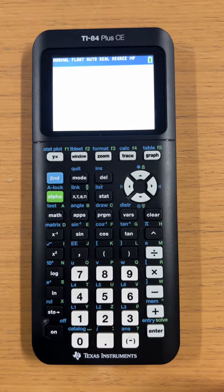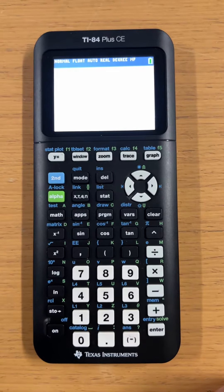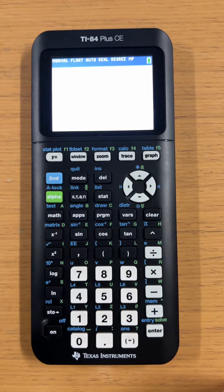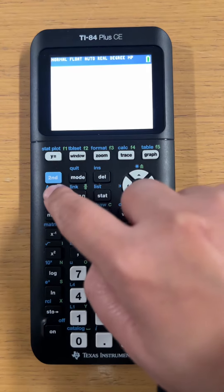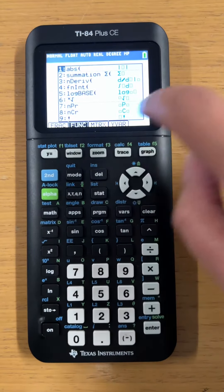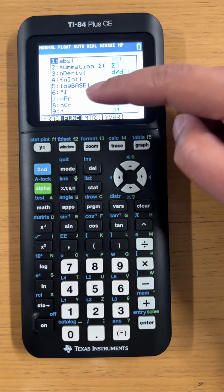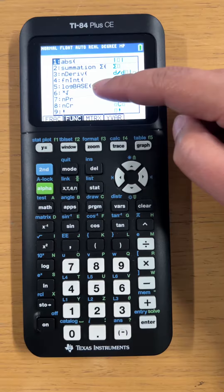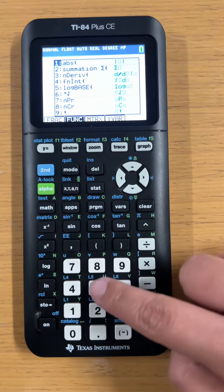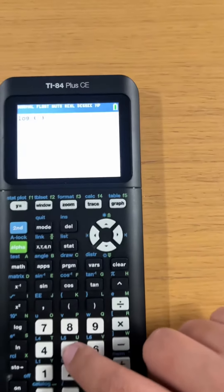First, we can use the alpha window. Press alpha window. Now the screen shows these features. You're going to go to five log base, or you can just click five, there you go.